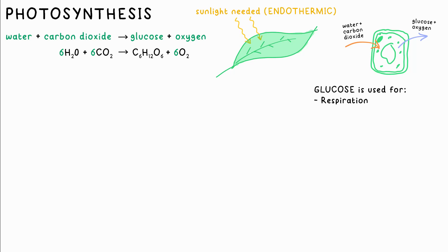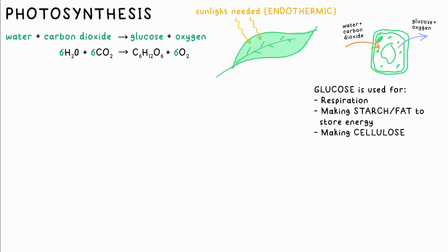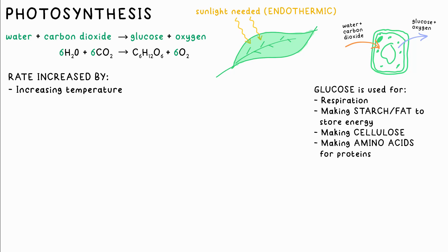The glucose made from photosynthesis is used for respiration or is turned into starch or fat as a store of energy. Cellulose is used to produce cell walls and amino acids are used for synthesizing proteins.